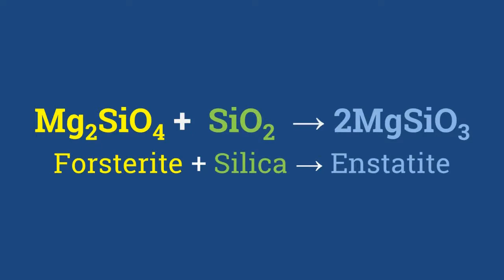For example, forsterite is not stable in the presence of free SiO₂, because forsterite and silica readily react to form enstatite, a mineral of the pyroxene family.